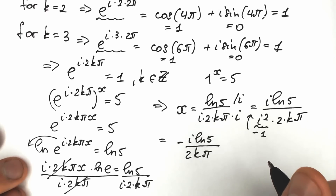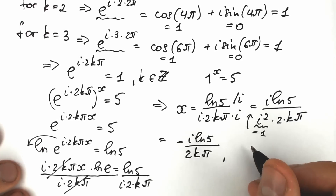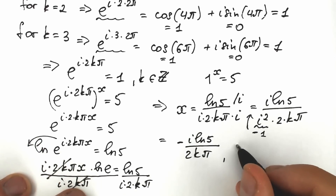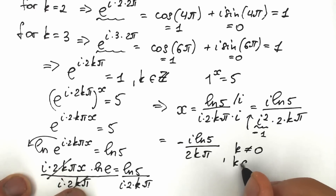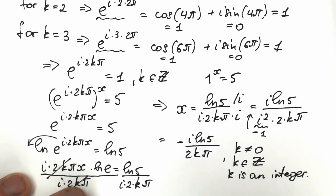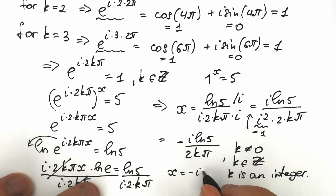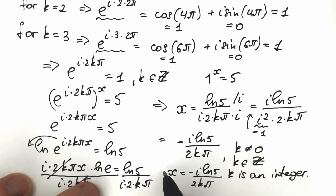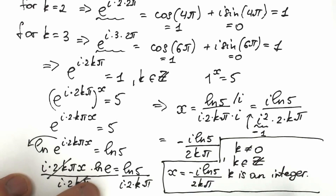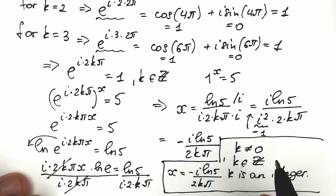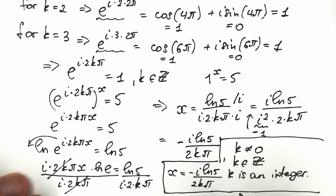This is our answer, but with one really important condition: k is not equal to 0, because k appears in the denominator. And k must be an integer. So our solution is x equals minus i times natural log 5 over 2k pi, where k is a nonzero integer. This is not a single general solution — it's a family of solutions depending on k. We don't know what happens for non-integer values of k, such as real or complex or decimal values.